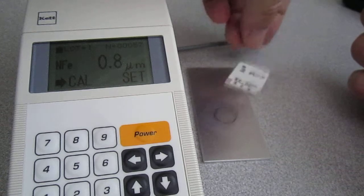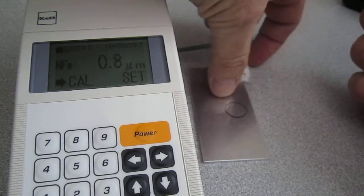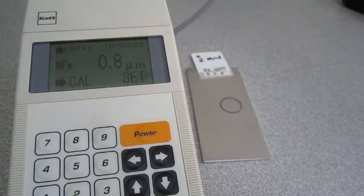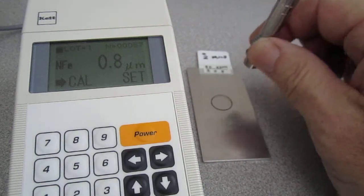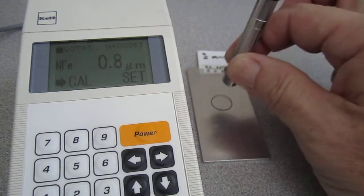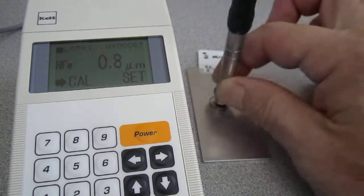Now, normal application, you wouldn't want to measure on a bare substrate. What you'd want to measure is with some sort of film thickness, coated, painted, plated, or whatever. In this case, we're using one of our shims that we use to calibrate the instrument.